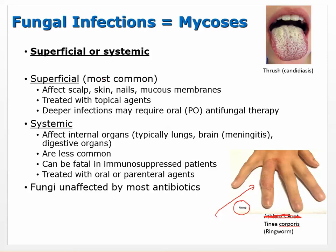Tinea corporis is a type of tinea — a superficial infection. Deeper infections may require oral antifungal. Thrush — candidiasis — is what we see on the tongue, and yeast infections fall in the fungal family. Systemically, fungi can affect internal organs — typically lungs — and brain meningitis can happen. Digestive organs are less common. These can be fatal in immunosuppressed patients and are treated with oral or parenteral agents.